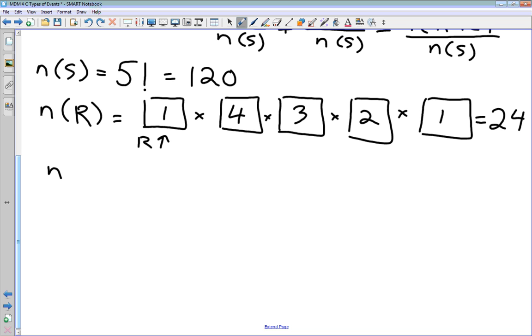And we can follow a similar sort of logic for the number of arrangements where Charlie is on the far right. If we place Charlie here, that's our one person. And then we have four choices for here. Three, two, one. A grand total of 24 ways that we can have Charlie located in the right-hand position.